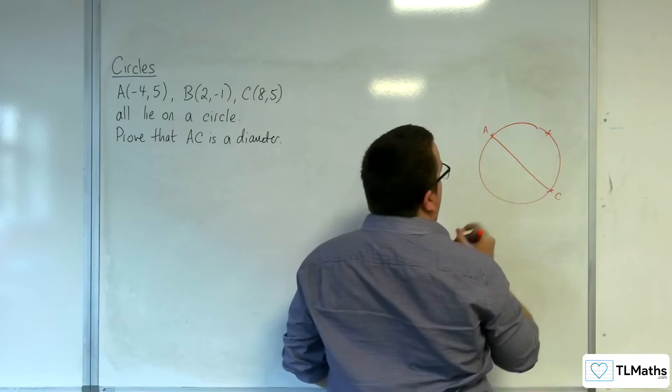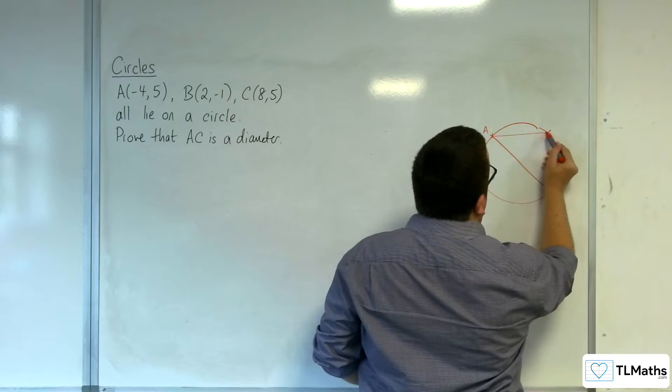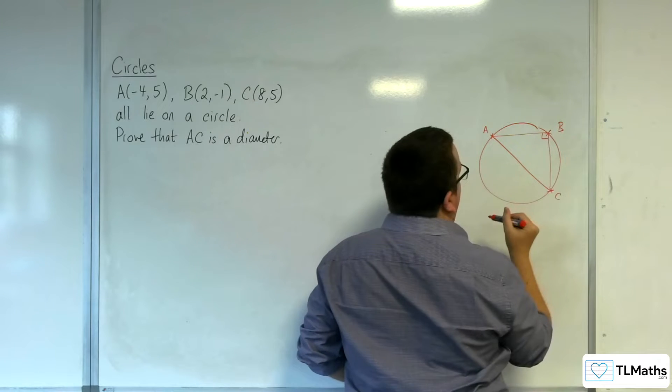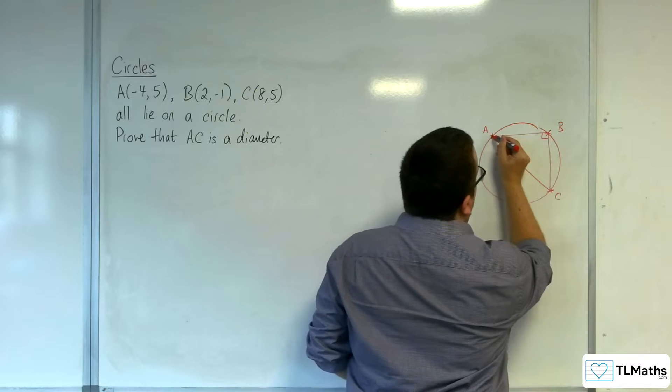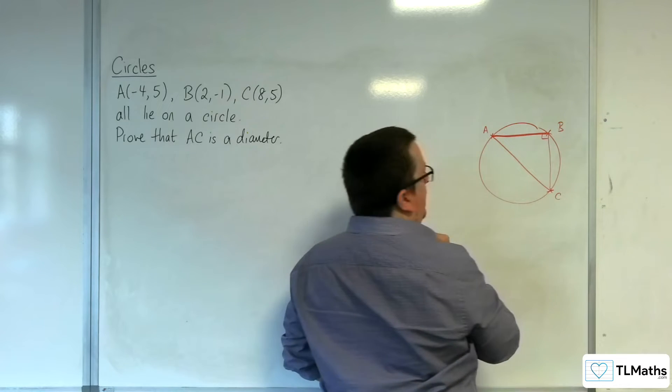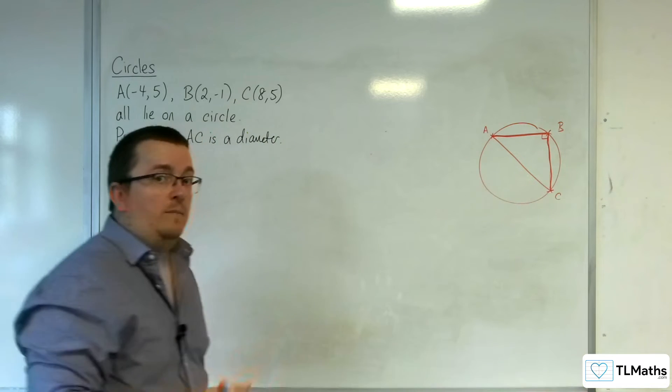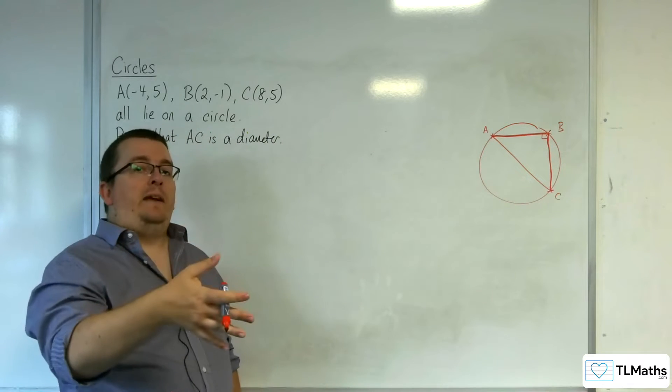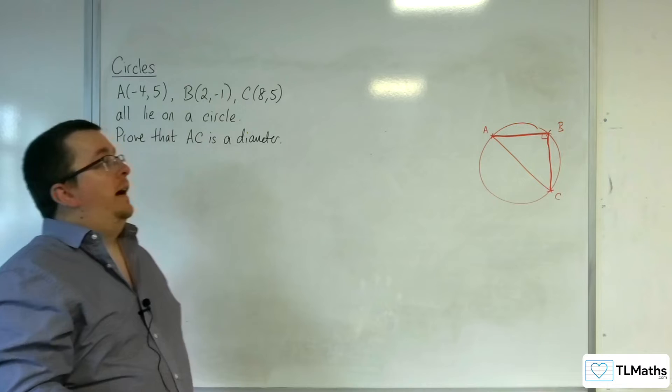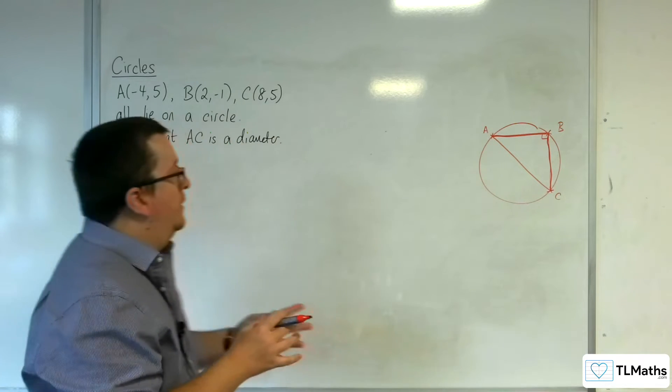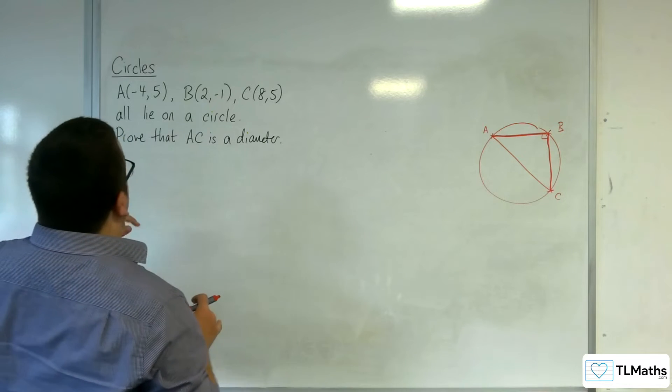So, we've got those two points there, then we know that in connecting with B, that this has got to be a right angle. If I can show that the gradient of this line and the gradient of this line multiply together to make minus one, that means that they are perpendicular, and so that means AC has to be a diameter. That is the process that we're going to go through. So, let's have a look at this.